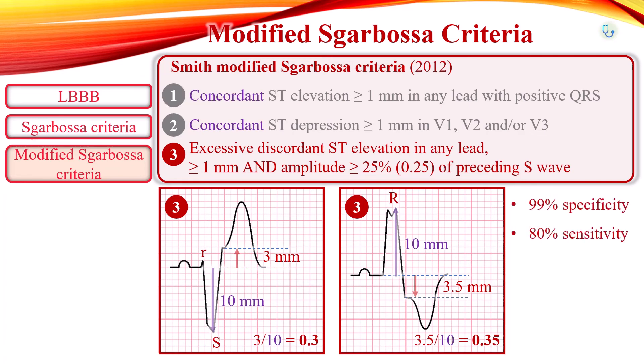The presence of at least one of the three criteria has 99% specificity and 80% sensitivity for diagnosing acute myocardial infarction in the context of known left bundle branch block. In patients with suspected acute myocardial infarction and left bundle branch block, the Sgarbossa criteria are very useful due to high specificity and positive predictive value. If none of these criteria are met, the diagnosis of STEMI cannot be established, and the patient should be further evaluated with serial EKGs, serial specific biomarker assays, and bedside echocardiography.